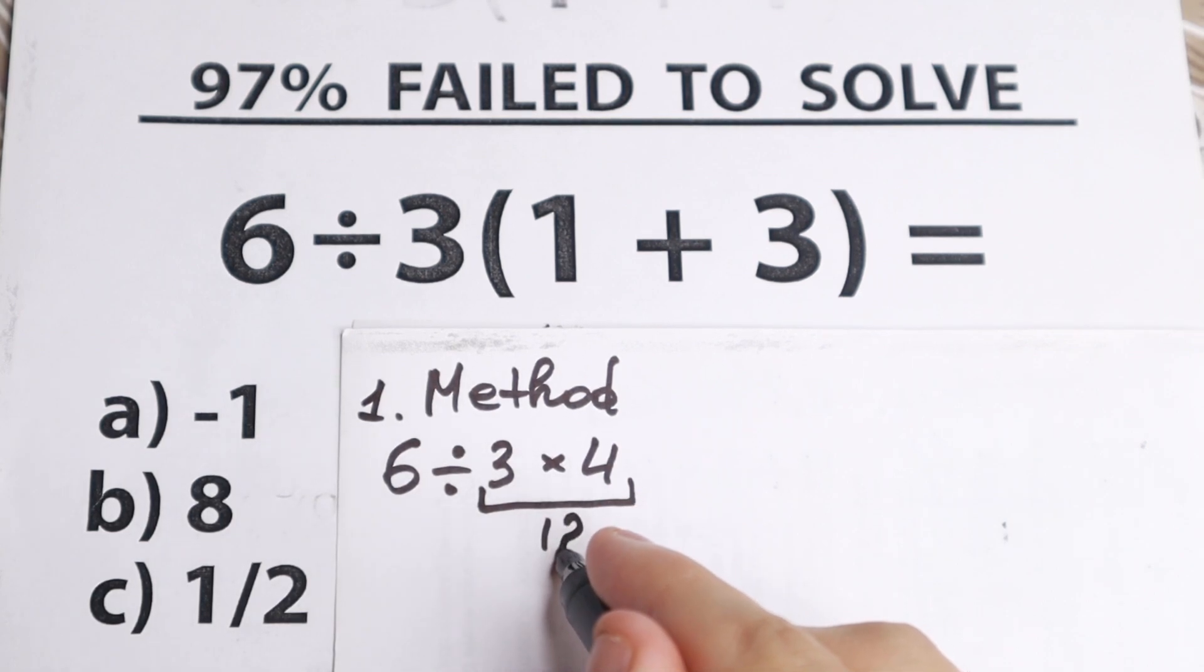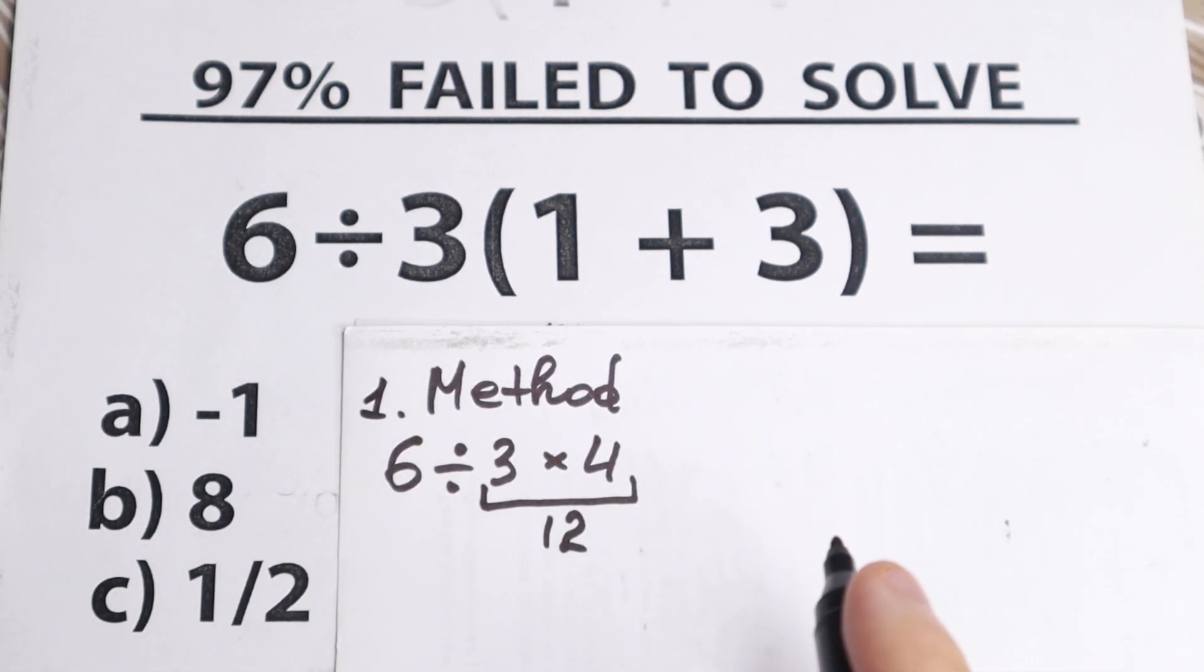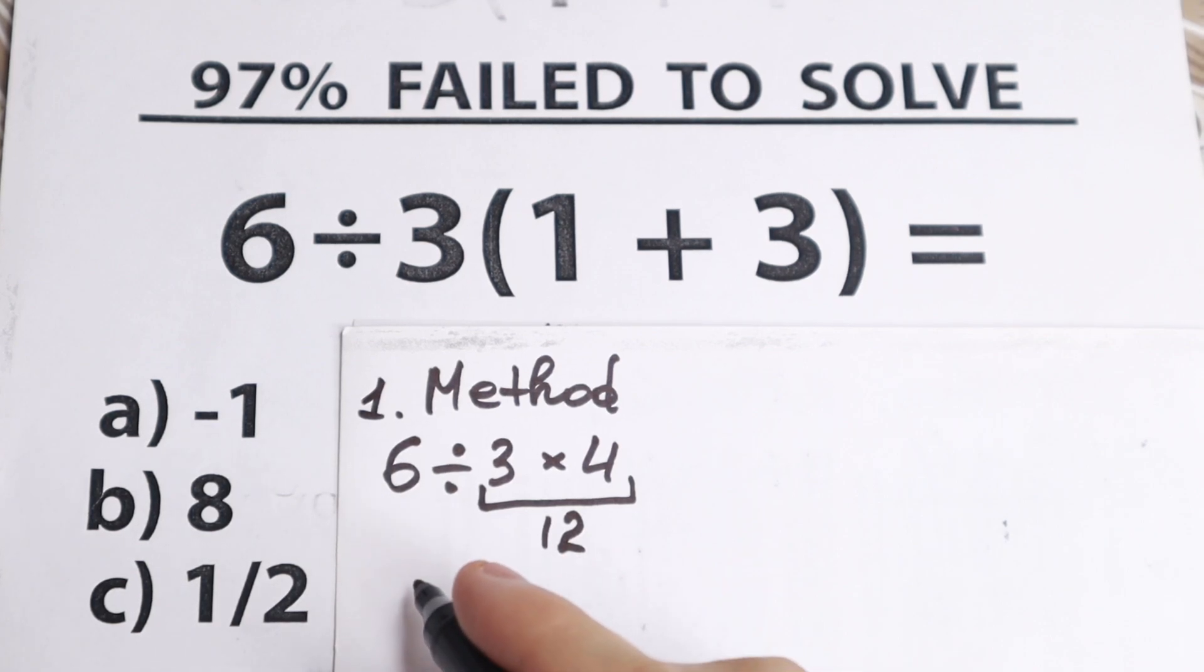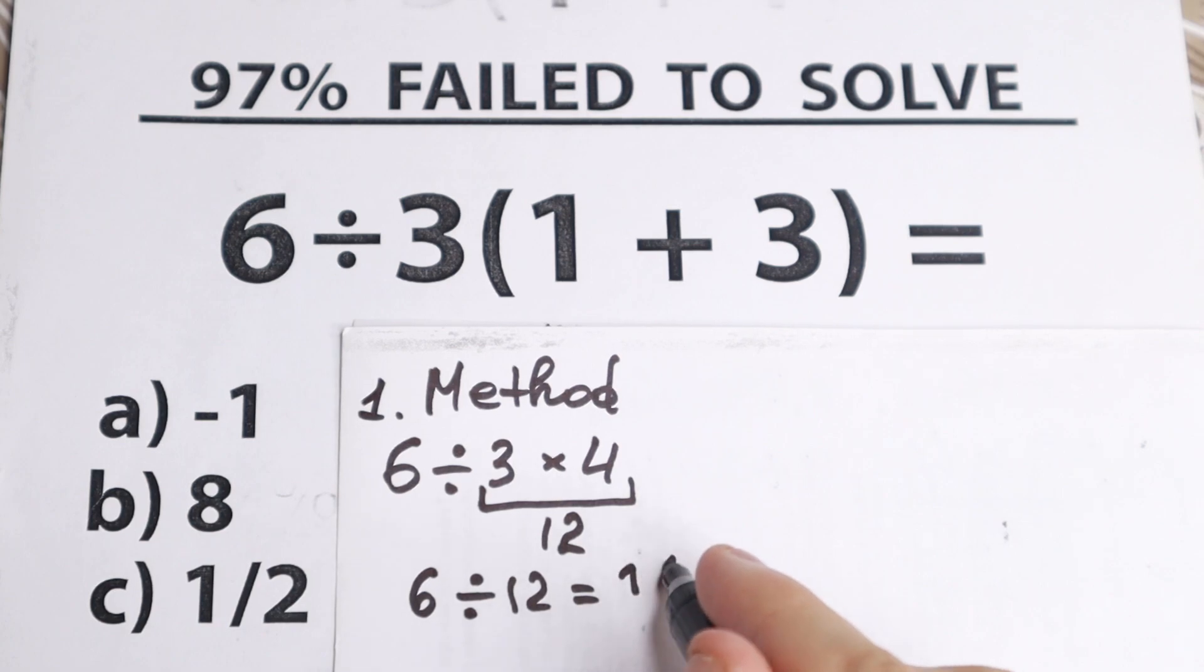So 3 times 4 equals 12. And we still have one moment right here. 6 divided by 12. We have 6 over 12. The answer is 1, 1 half.